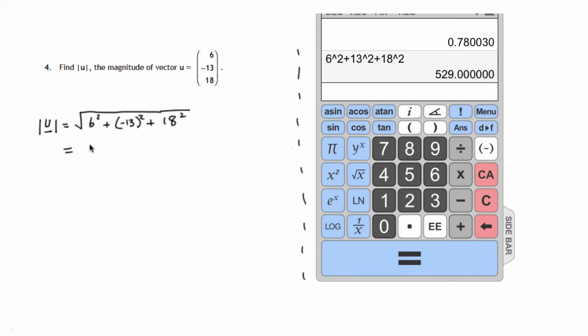That all comes to 529. So that's the number we have to find the square root of. The square root of that answer is 23. So the magnitude of that vector is 23 units.